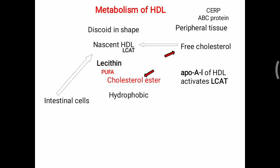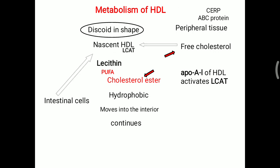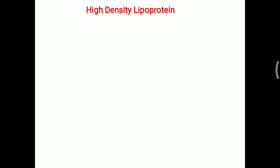The cholesterol ester is now internalized inside the HDL because it is hydrophobic in nature. Once there is an excess amount of free cholesterol converted into cholesterol ester, it moves into the interior of the HDL. This process continues, and the initially discoid-shaped HDL is converted into a spherical shape, called HDL3.